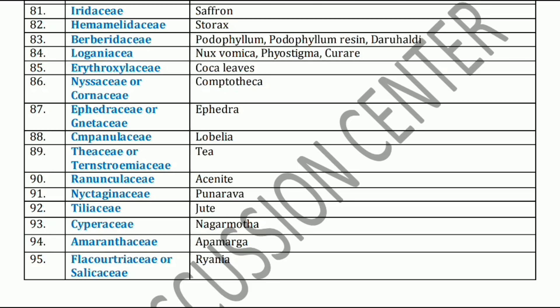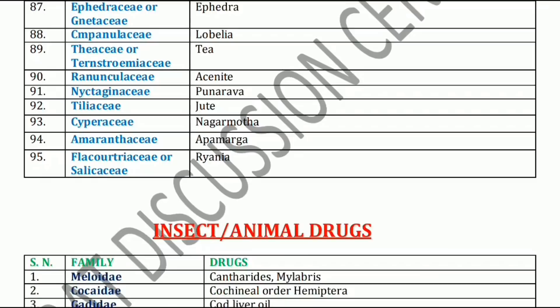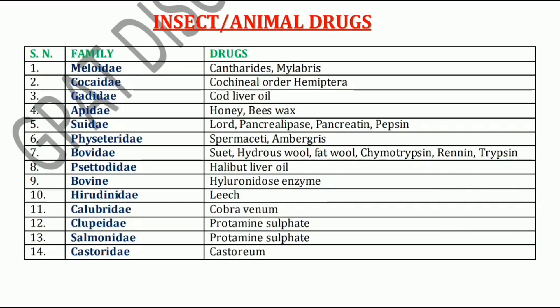And lastly, Flacourtiaceae or Salicaceae family, which includes Aranya. So these are the plants and their families within our syllabus. Some insects and animals are also used, and we have to study their families as well. Meloidae family includes Cantharis and Mylabris. Coccidae family includes Cochineal — order Hemiptera.